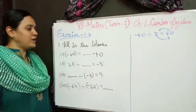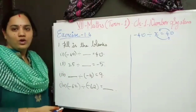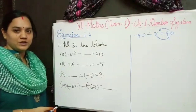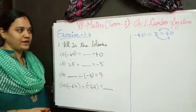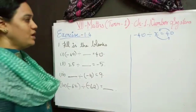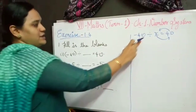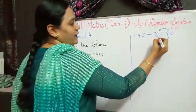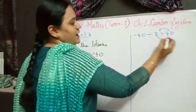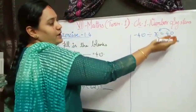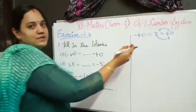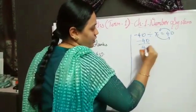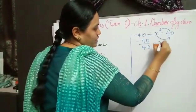The first question is filling the blanks. They have given 4 options. So here minus 40 divided by x equals 40. I am going to transfer x to the other side and bring 40 to the left hand side. So minus 40 divided by 40 equals x.